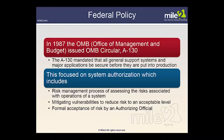With regard to federal policy, in 1987 the OMB — Office of Management and Budget — issued OMB Circular A-130, which mandated that all general support systems and major applications be secure before they are put into production. This focused on system authorization, which includes the risk management process of assessing risk associated with operations of the system, mitigating vulnerabilities to reduce risk to an acceptable level, and formal acceptance of this risk by an authorizing official.